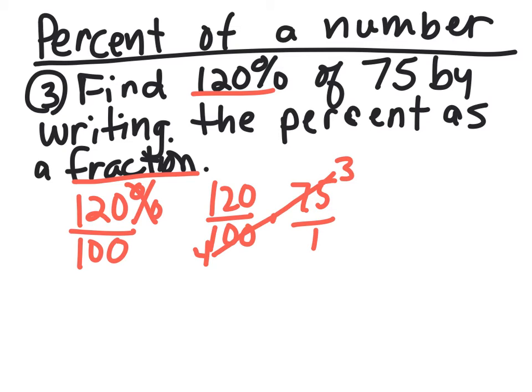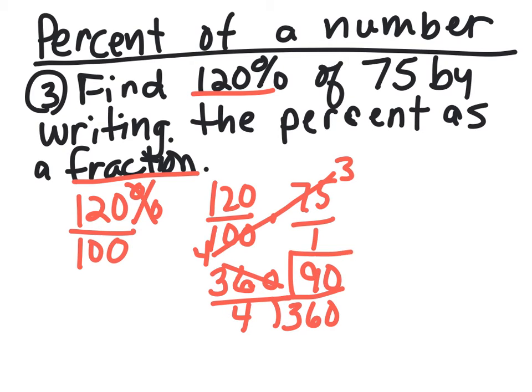We're going to get 3 times 300 - 360, sorry - 360 over 4. We're going to stop, drop, and divide because it's too heavy. So we're going to simplify it and get 90. So 90 is 120% of 75.